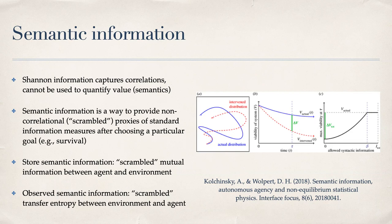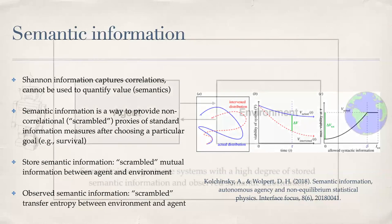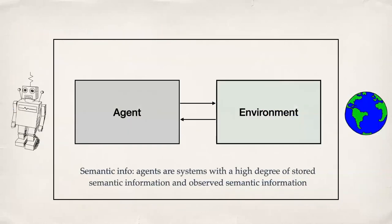Once again, the short version: agents are systems with a high degree of stored semantic information and observed semantic information. They are very good at causally predicting themselves, and good at using information from the environment to causally predict themselves.